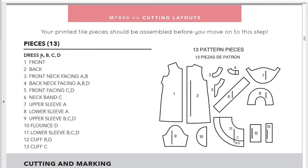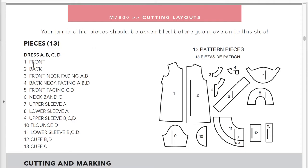There are 13 total pieces for this dress, but you don't need all 13 — it depends on your view. For dress A, B, C, and D you need pieces 1, 2, and so on, but it starts changing. For example, piece 3 is the front neck facing — for version B we do need it. Piece 4 is the back neck facing — we need that too. Piece 5 is for C and D, so we skip that. You'll work through the list and see exactly which pieces apply to your version. This is just an image of what they all look like.